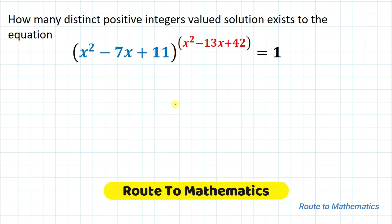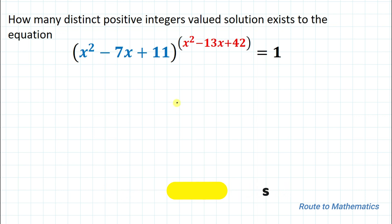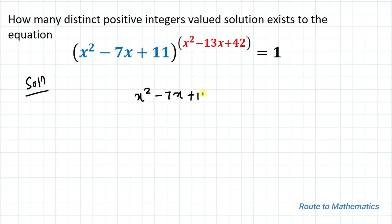Hello everyone, welcome to Root to Mathematics. In this video we are going to solve an interesting exponential question. The given question is: how many distinct positive integer valued solutions exist to the equation (x² - 7x + 11)^(x² - 13x + 42) = 1? We are asked to find the number of possible values of x.